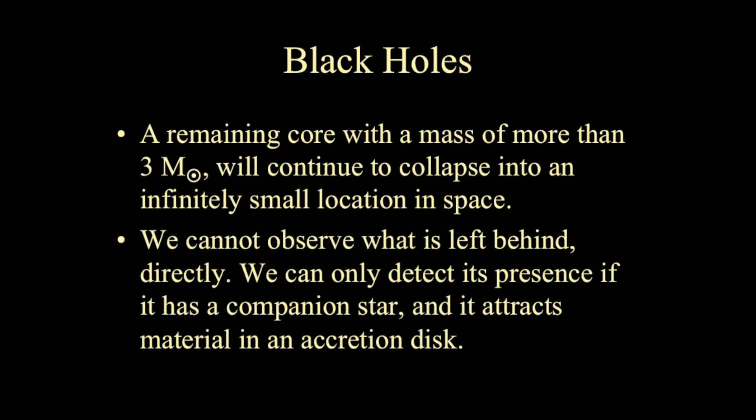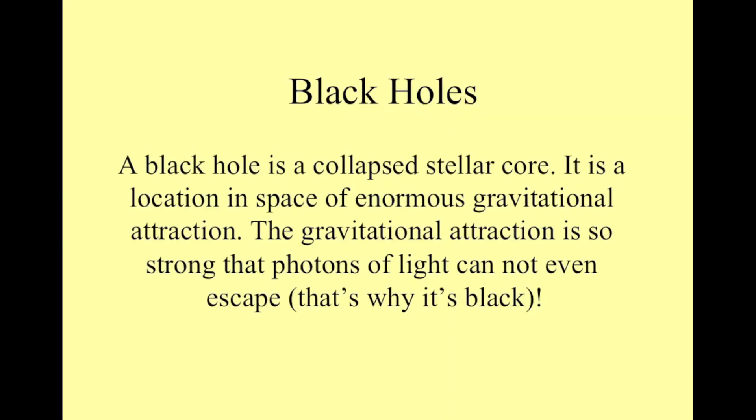And so the only way that we can observe black holes is if there's material that is swirling or accreting onto the black hole, particularly if it's in a binary system. So that's all a black hole is. It's a collapsed stellar core. It's a place in space that has enormous gravitational attraction and it's so strong that even light cannot escape. That's why we call it a black hole.